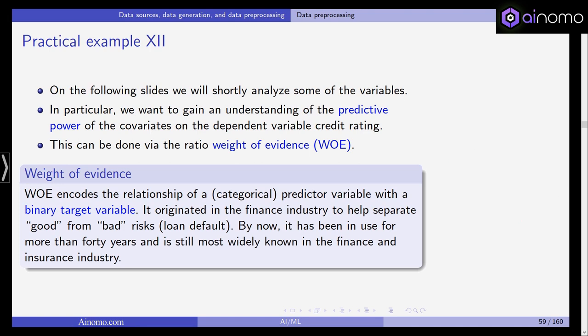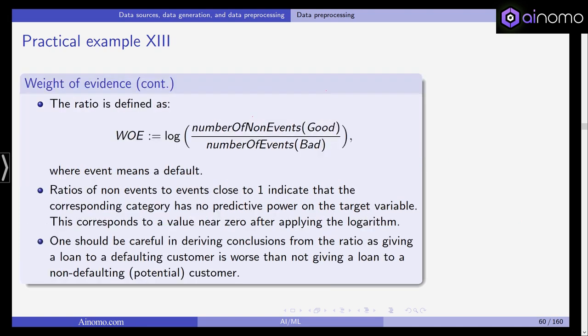The WOE is defined as the logarithm of the number of non-events (good ratings) divided by the number of events (bad ratings). Ratios of non-events to events close to one indicate that the corresponding category has no predictive power on the target. This corresponds to a value near zero after applying the logarithm.